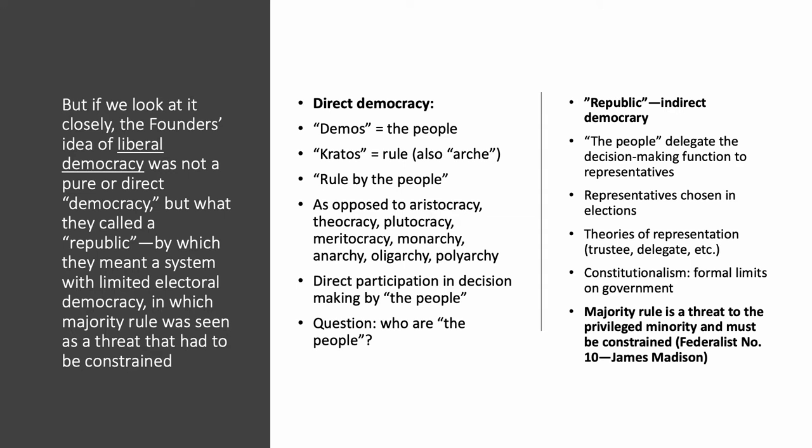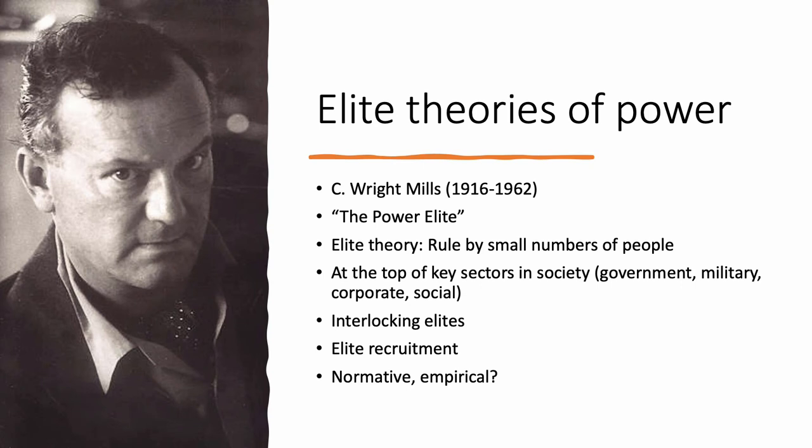There are different theories of how elected representatives should operate — as trustees, exercising their own judgment, or as delegates, doing what the people who elected them wanted. They also agreed on constitutionalism: a written constitution where government had certain delegated powers and certain limits it agreed to. However, the founders viewed pure majority rule as a threat to the privileged and propertied minority. When they talked about minorities, they mainly meant property owners. As you'll see in Federalist No. 10, that's exactly what James Madison says.